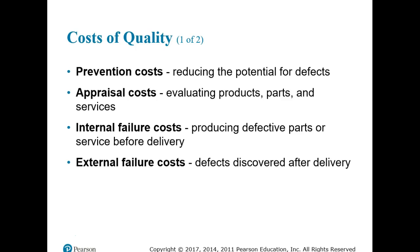There are four major categories of costs associated with quality. Prevention costs are those associated with reducing the potential for defective parts or services, such as training programs and quality improvement programs. Appraisal costs are related to evaluating products, processes, parts, and services — including testing labs and inspectors. Internal failure costs result from production of defective parts or services before delivery to the customer, including rework costs, scrap costs, and downtime.